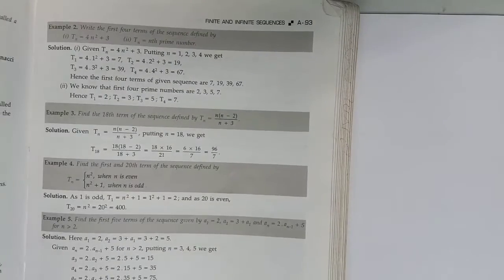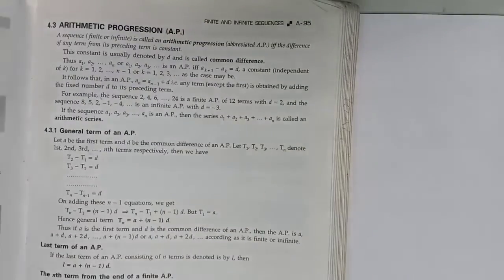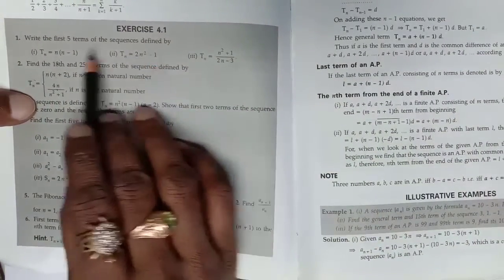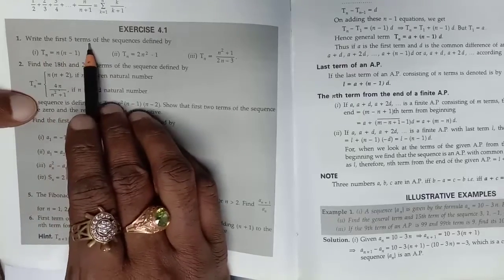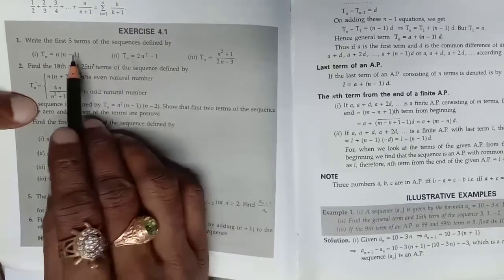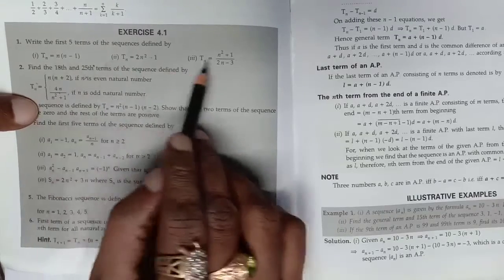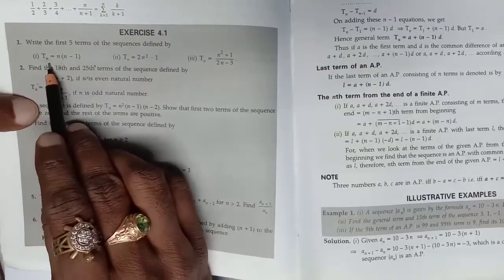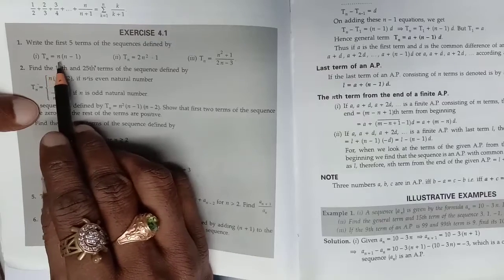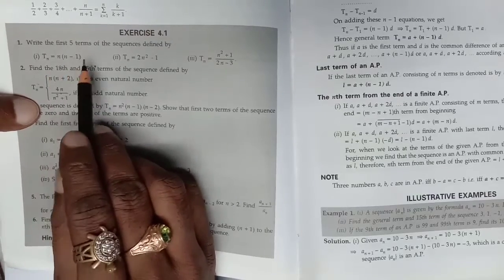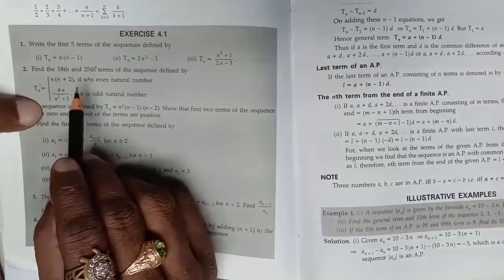Let us see Exercise 4.1. The exercise belongs to: the nth term is given and you have to find out the number of terms. Write the first 5 terms of the sequence defined by this nth term. There are 3 parts. You have to find the 5 terms by putting n equal to 1, then 2, then 3, then 4, then 5. This is the way of solving.